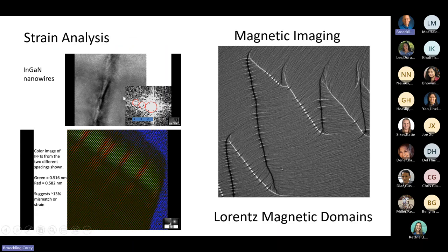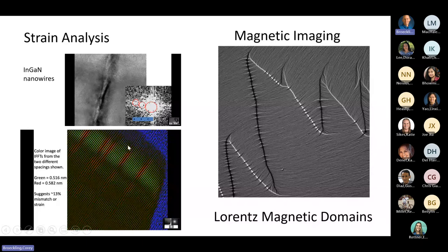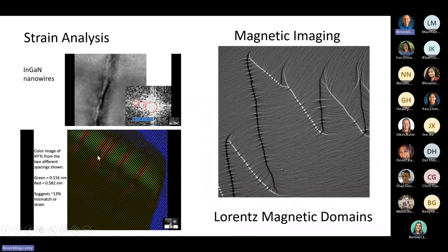Here's strain analysis. This is back again to the indium gallium nitride nanowires where the indium goes in. You get these bands and they're strained there. When you look at diffraction, you actually see a modification of the diffraction pattern. By taking the images and then doing a backscatter imaging of the different spots, we can create a color map. The green is the gallium nitride, the red is where you have indium gallium nitride.